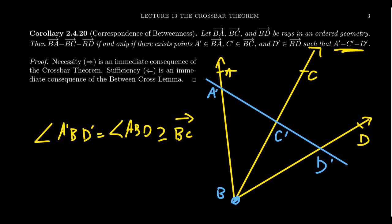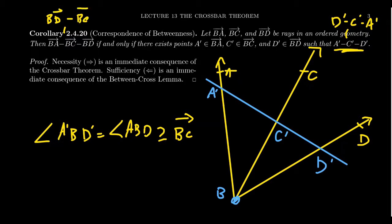Because of the correspondence of betweenness of points and rays, betweenness of rays is going to inherit many of the same properties that betweenness of points has. For example, the symmetric property. Because we can turn A'C'D' around to become D'C'A', we can also turn the rays around: BD between BC and BA becomes symmetric.